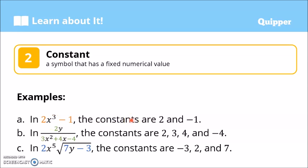An algebraic expression can be a constant alone — for example, just 2 is considered an algebraic expression. In example b, 2y over 3x² + 4x − 4, the constants are 2, 3, 4, and negative 4. In example c, the constants are 2, 7, and negative 3.